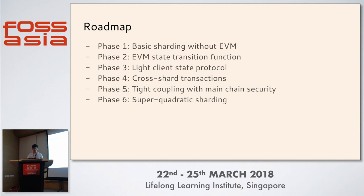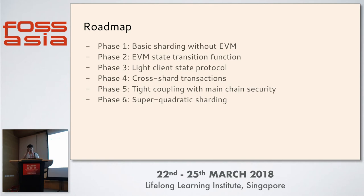Phase five is tight coupling with main chain security. Currently they depend on the main chain — that is loose coupling, where everything in the shard chain is determined by the main chain — and phase five will change that. Phase six will achieve super-quadratic sharding.